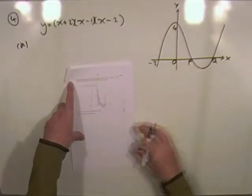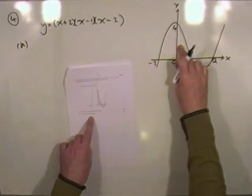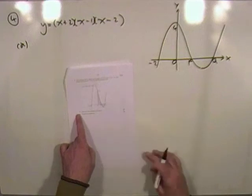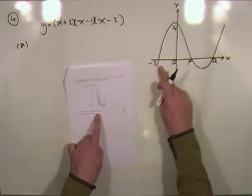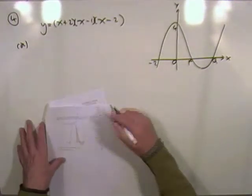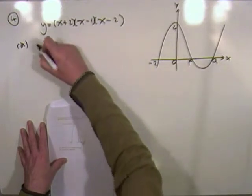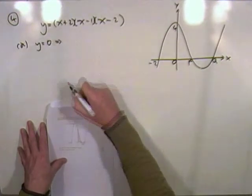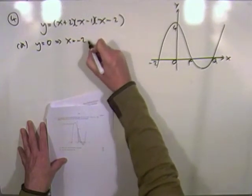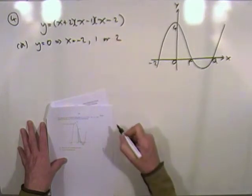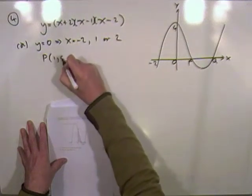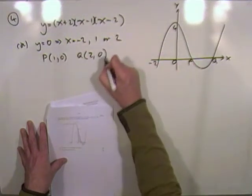Question four is a graph and you have to find the total shaded area. First, it's given in factorized form and asks for P and Q. The negative two comes from that factor, and since y equals zero when x equals negative two, one, or two, P is the first positive root: (1, 0), and Q is the next one: (2, 0).